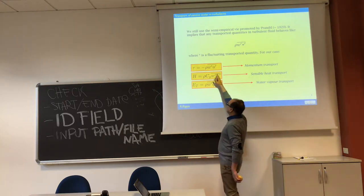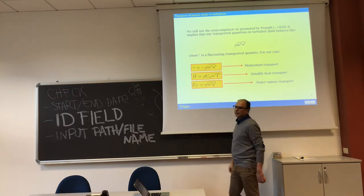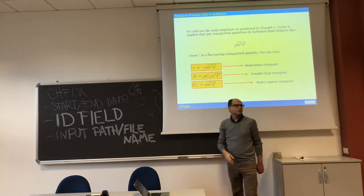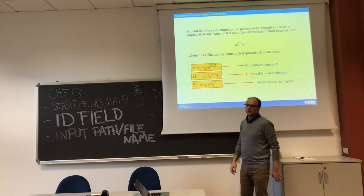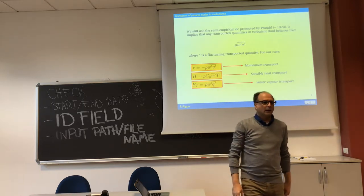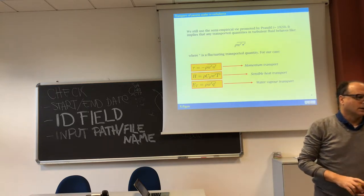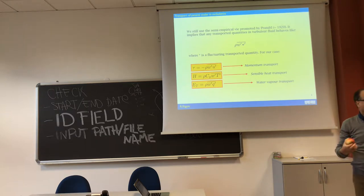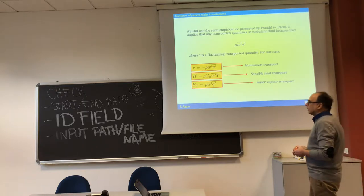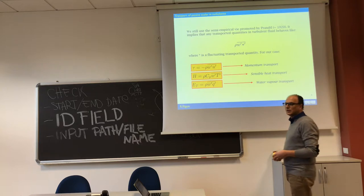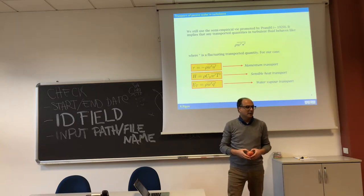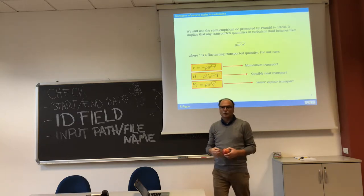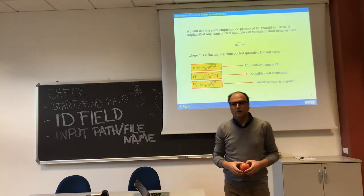That's the transport of momentum. If in place of U you place T, temperature, you have the turbulent transport of heat. And if you place specific humidity q, you have the transport of water vapor. Transport of water vapor for us is the result of evapotranspiration. We call it evapotranspiration because it's evaporation and transpiration, and we use more or less the same methods or models to describe them, though they are not actually the same thing.